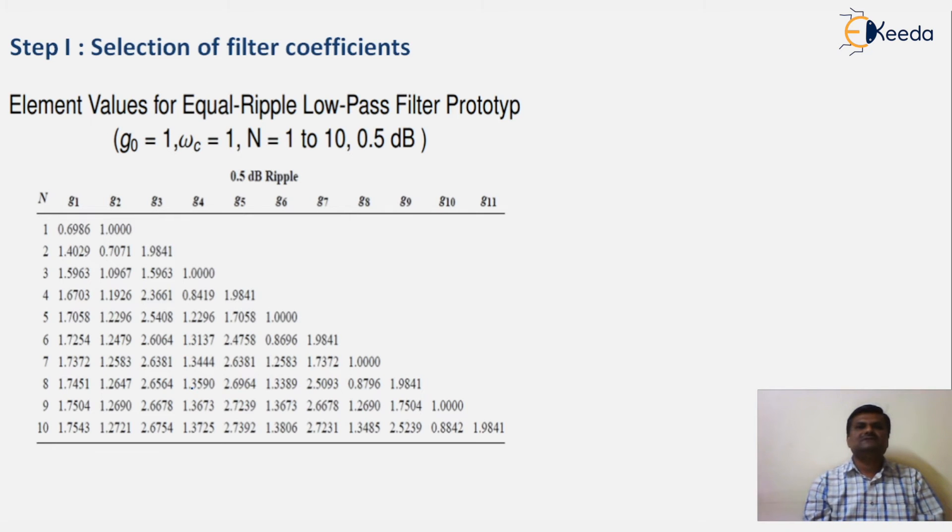This table is provided, which has G0 equal to 1, R0 equal to 1, and these are the normalized values of the low-pass filter prototype. This table is designed for N values 1 to 10 and for 0.5 dB ripple. We need N equal to 3 position.